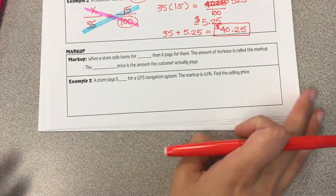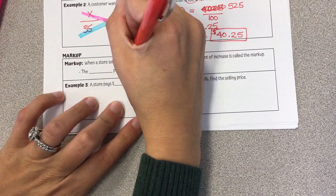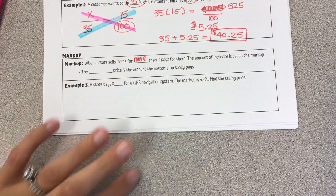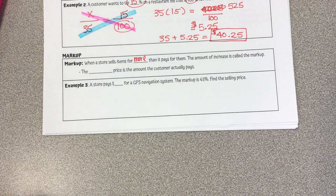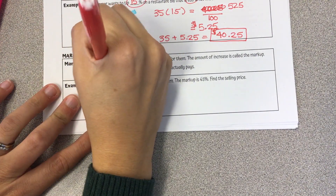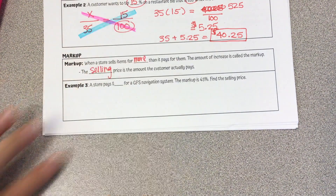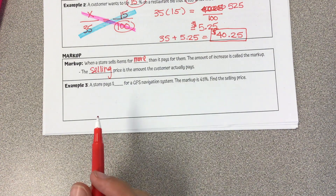Markup. When a store sells items for more than it pays for them, the amount of increase is called the markup. They have to make some money, so they're marking it up. The selling price is the amount the customer actually pays. They buy a product, mark up the price from what they paid for it, and then they have a selling price.